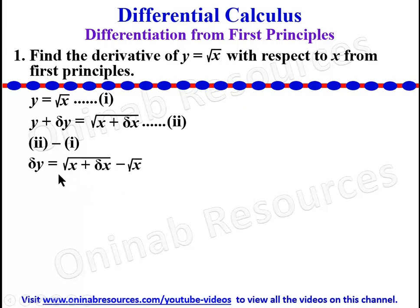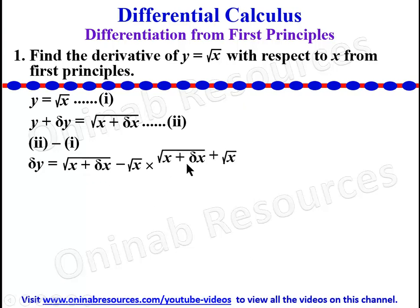Now here we need to multiply this by the conjugate over the conjugate. The conjugate of this is root x plus delta x plus root x. So we multiply by root x plus delta x plus root x over root x plus delta x plus root x.